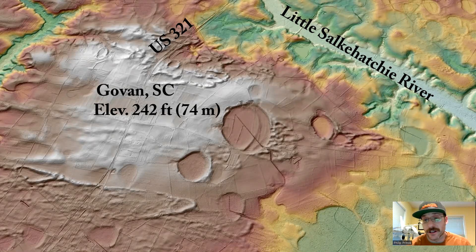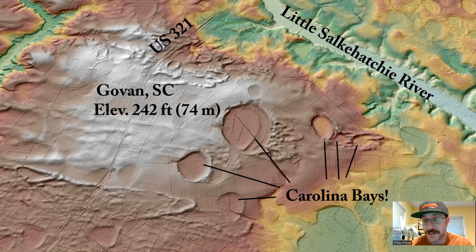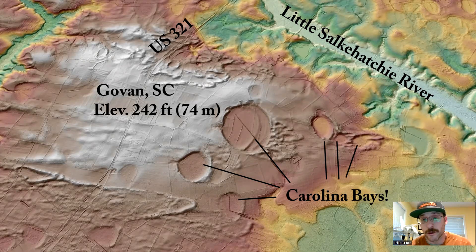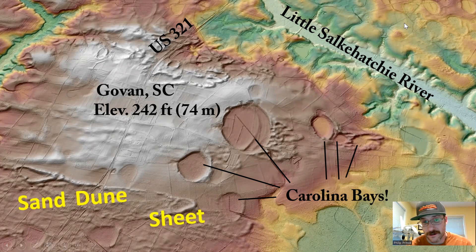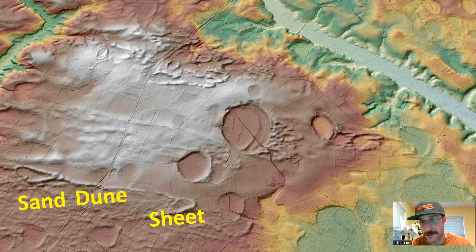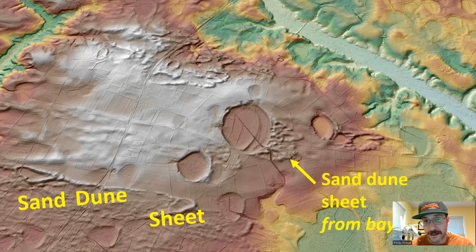If you're online researching Carolina Bays, chances are you're going to be seeing the same features over and over again — from a specific location in the Coastal Plain of North Carolina. You will not be seeing landforms like the big sand dune sheets on screen right now, which are absolutely abundant in the Atlantic Coastal Plain. They're not visible today because they're covered with vegetation, and many actually come from the edges of the Carolina Bays themselves.